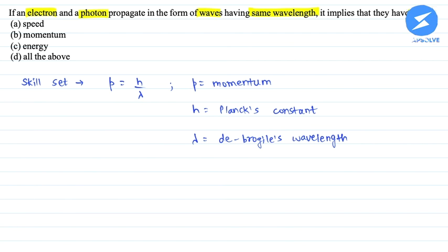So what do we write? Given: lambda of electron equals lambda of photon.